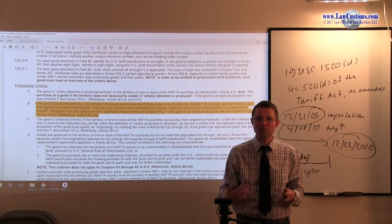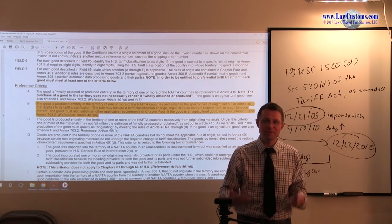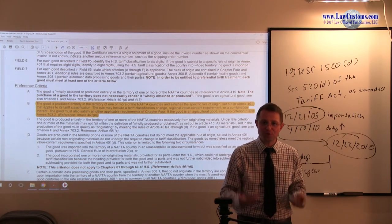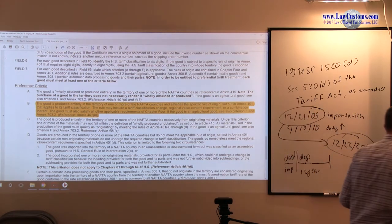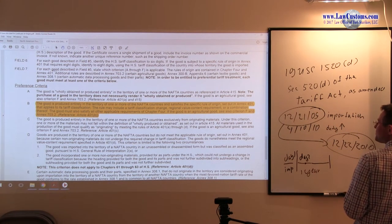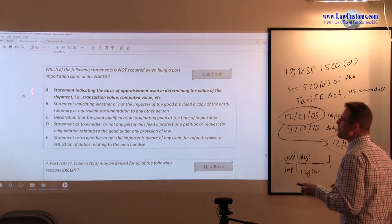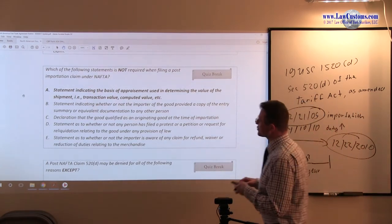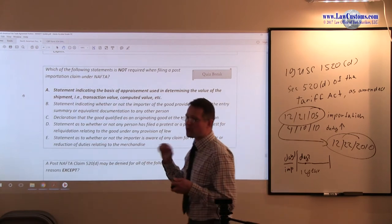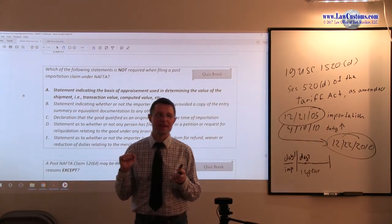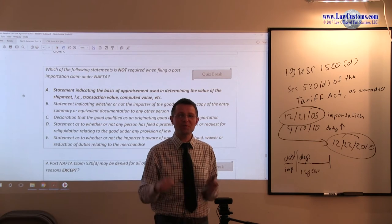And here is when transaction value method comes into play. For transaction value, of course, you have to have a transaction value, which means you have to know how you determine that transaction value. So in a derivative kind of way, you're kind of making a statement indicating basis of appraisement through the copy of the certificate of origin. But again, this is derivative thinking.